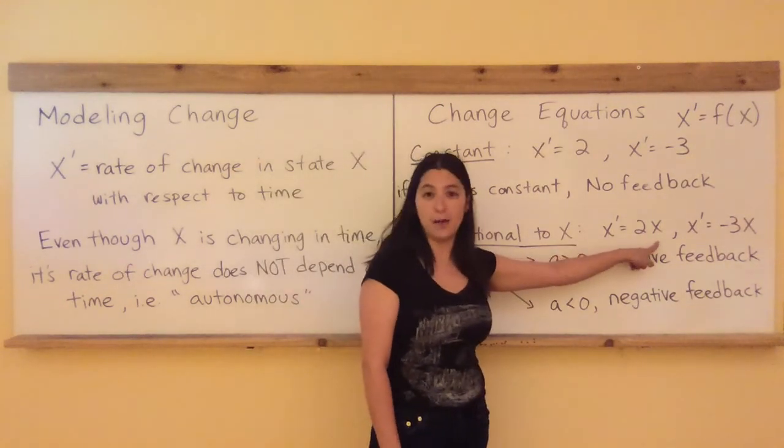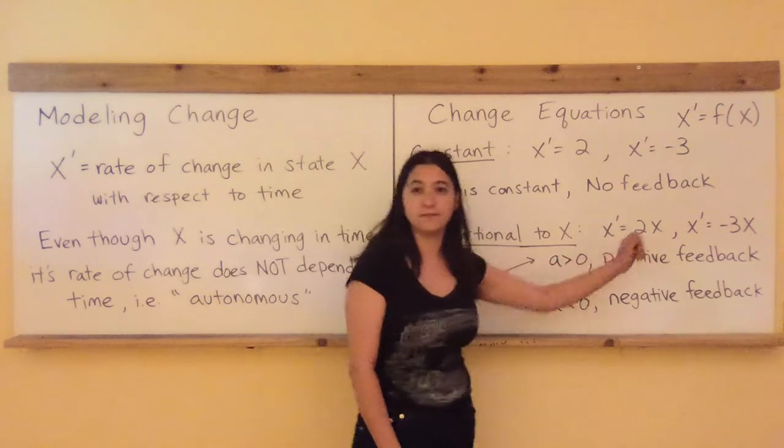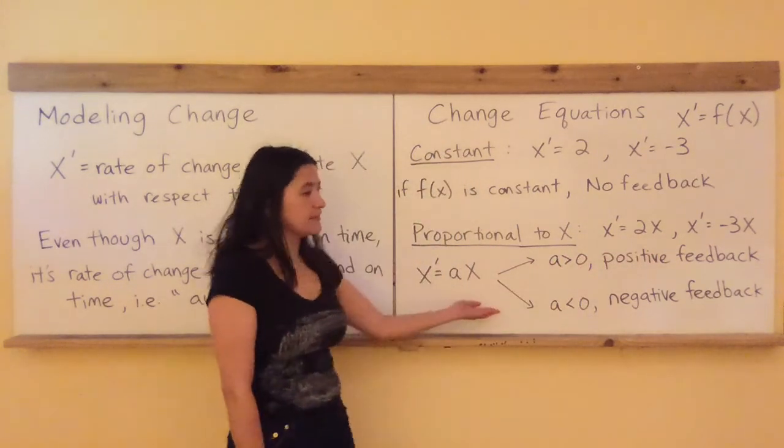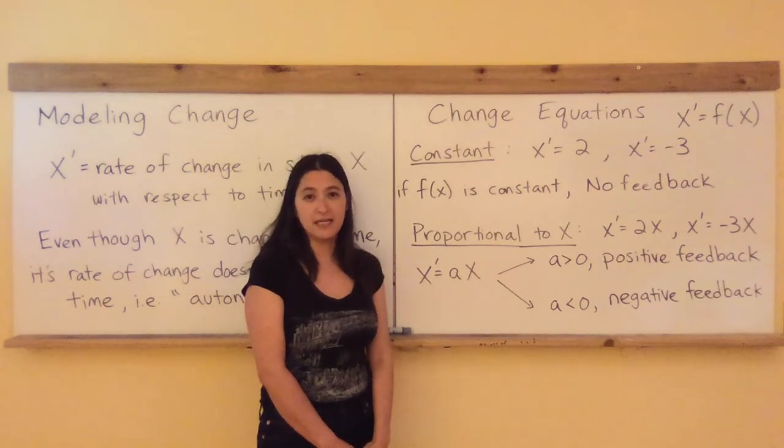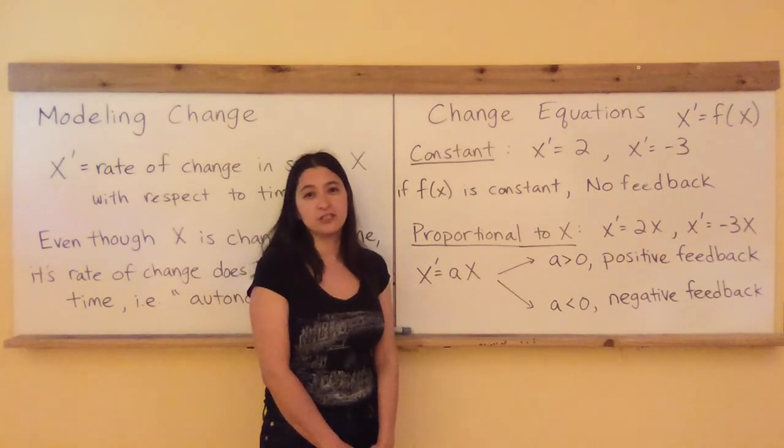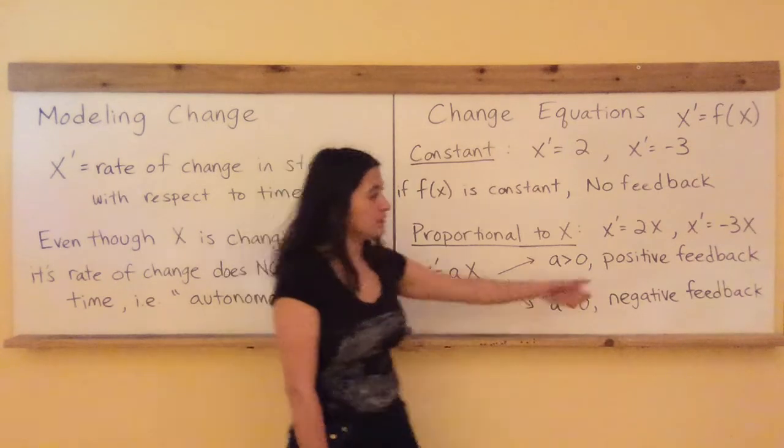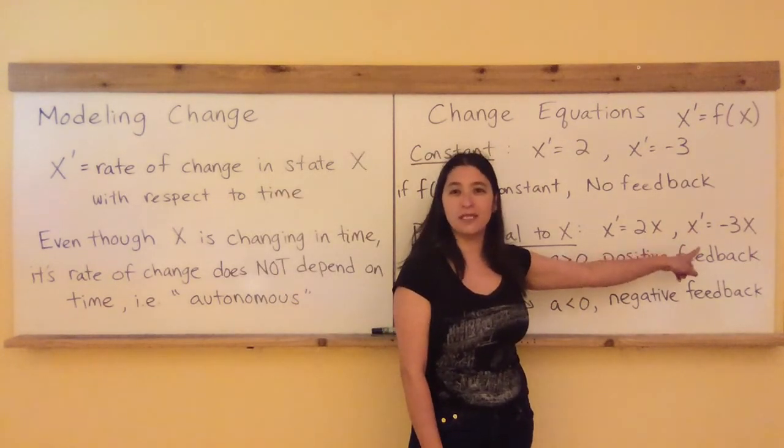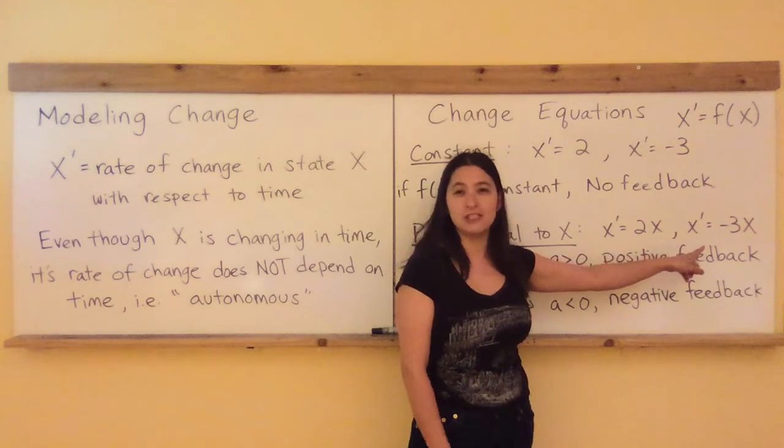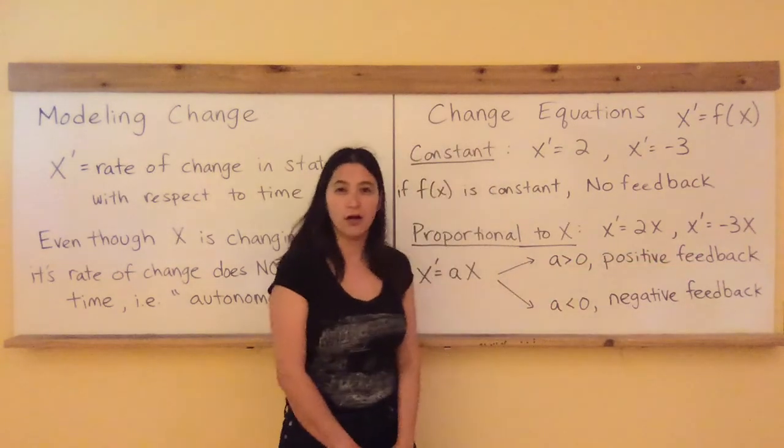If a is something that's less than 0, that's when we're going to get negative feedback, and that's going to lead to exponential decay. For example, when X prime equals minus 3X, X will be going down by minus 3 times how many X there are, and that's going to lead to an eventual decay of the system.